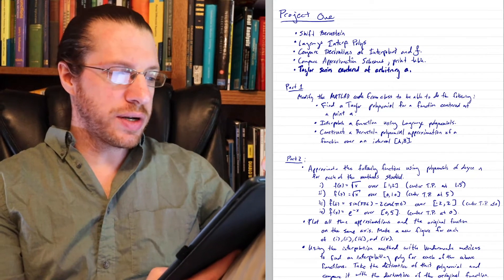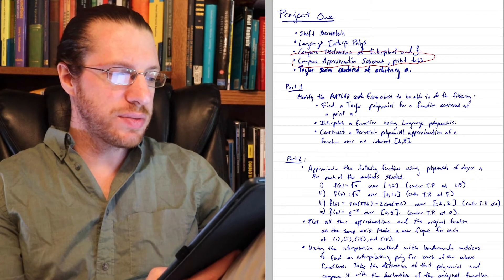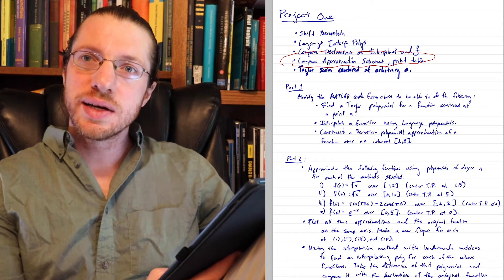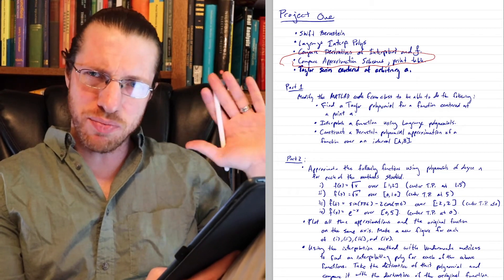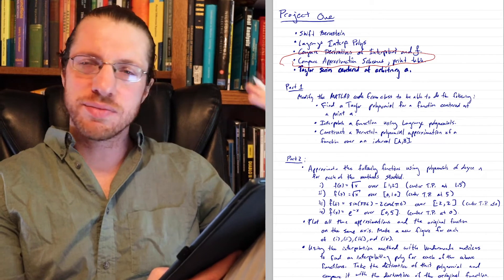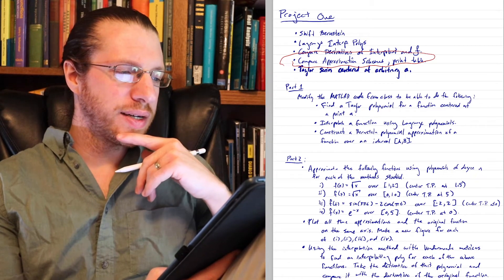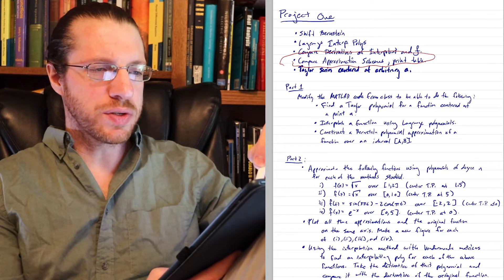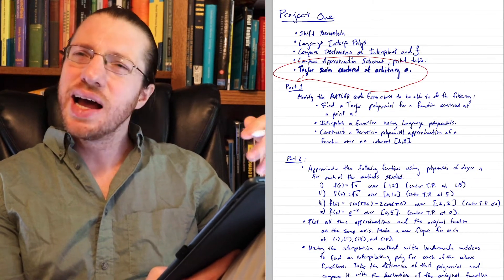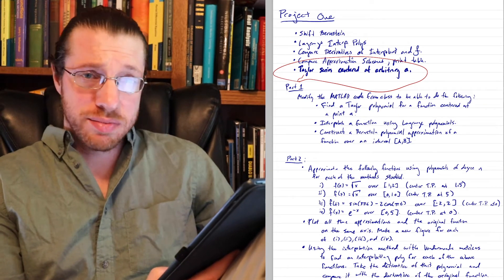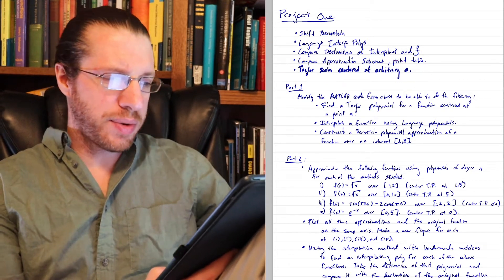And then I want you to compare all these approximation schemes and then give us a table. When I say print a table, I don't mean actually print a table, I mean like just display a table in MATLAB. And that you're going to have to do some finagling with. And then I also want you to be able to do a Taylor series centered at arbitrary A. I can't remember if I just did Taylor series centered at zero. This code might already be there. And if it is, ta-da, you win.